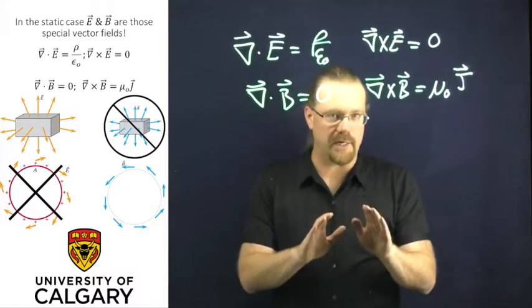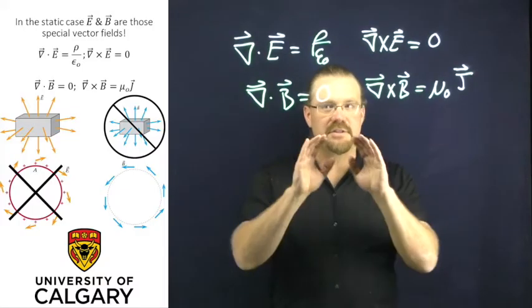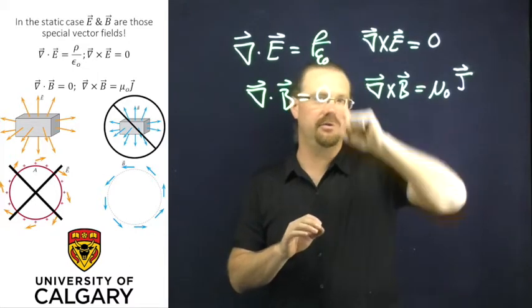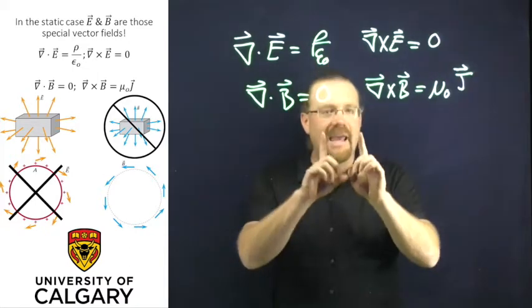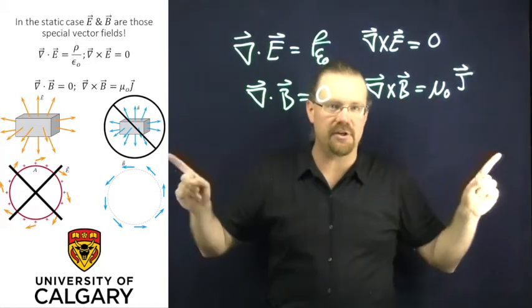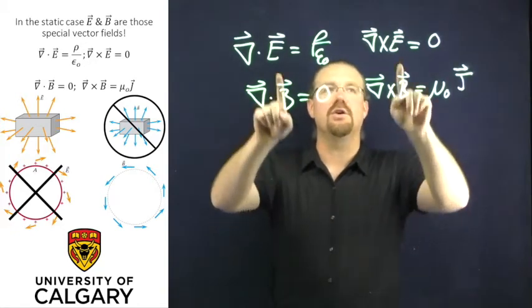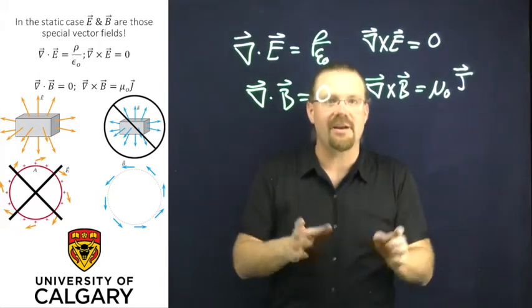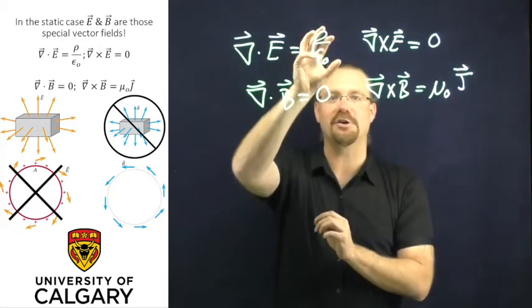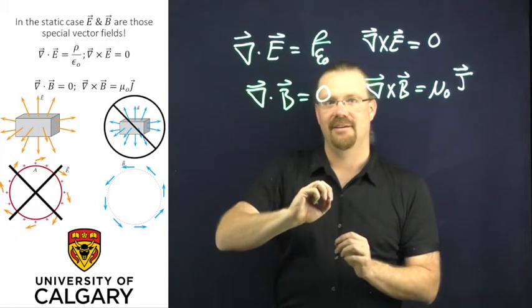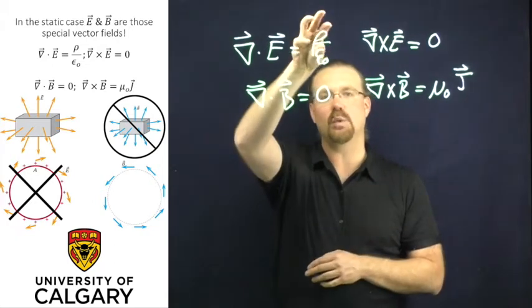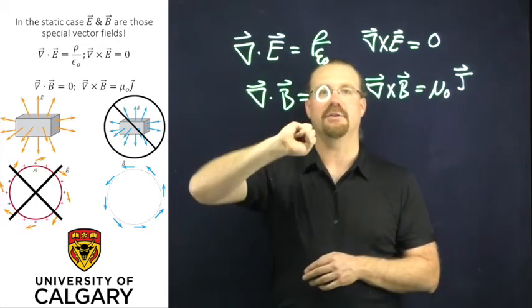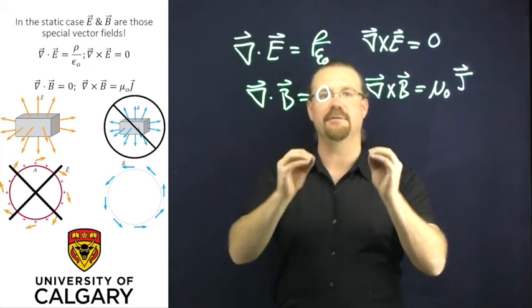The corollary to Helmholtz's theorem that stated if we know the divergence and we know the curl, and we know that our fields vanish at infinity, we can solve for what our fields are. This means that if we know what our charge density is in the electrostatic situation, that's the only thing we need to generate our electric field. It is sufficient information.